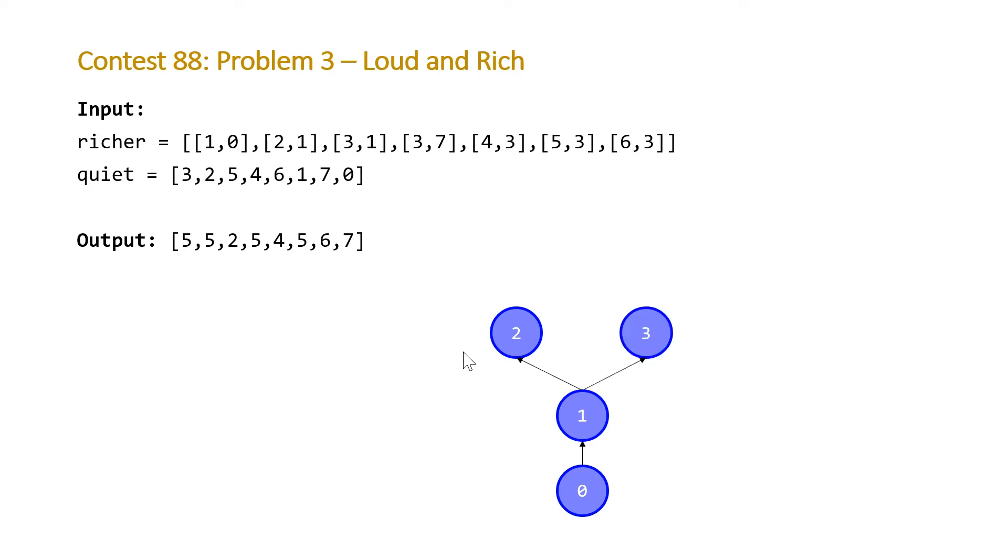So if we do the rest of the elements, this one is three and one—individual three has more money than individual one. Three has more money than individual seven. Four has more money than individual three, and so does five and six. So we end up with a graph looking like this. If we add to our graph these quietness levels up in a superscript, it would look as follows.